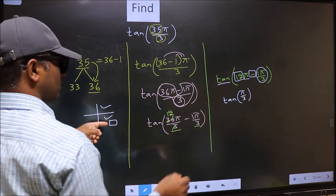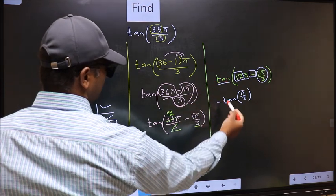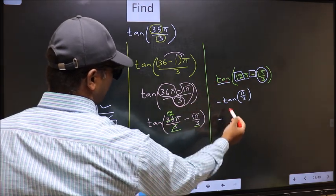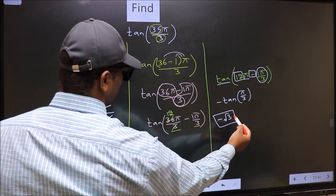So we should put negative. So negative tan π by 3 is root 3. This is our answer.